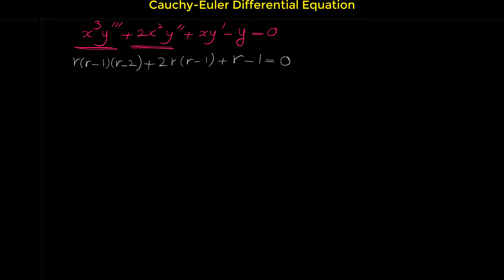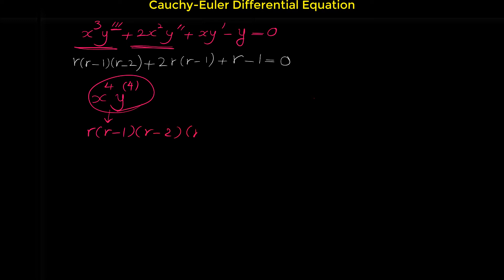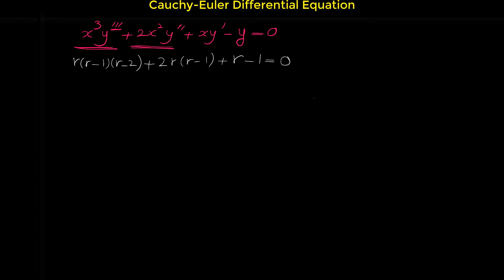When we have triple prime, we put r(r-1)(r-2). Can you guess for x times the fourth derivative of y? The characteristic equation would be r(r-1)(r-2)(r-3), and we can continue this pattern for even higher degrees. In this way we can find the characteristic equation for any order of Cauchy-Euler differential equations.